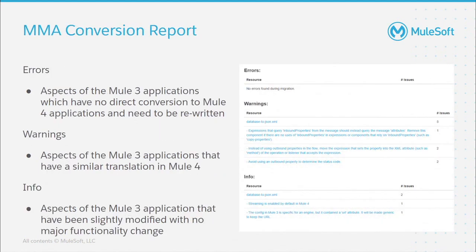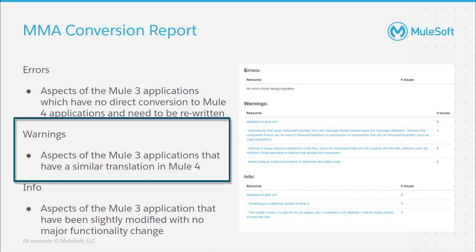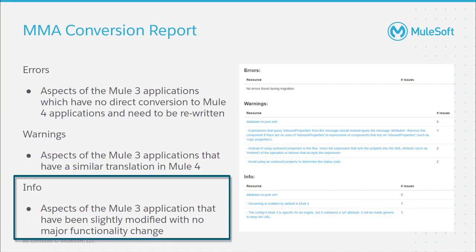As previously mentioned, the MMA is intended to kickstart the migration of Mule 3 applications but will not always be able to convert every aspect of these applications. So what happens when your Mule 3 applications contain components that cannot be directly converted to Mule 4 components? For this, MuleSoft has provided a report that guides you on how to approach the conversion process for these components. This conversion report will highlight components that need to be fully rewritten, components that need to be partially rewritten with similar Mule 4 components, or components that have been slightly modified to conform with Mule 4 standards but with no major functionality changes.